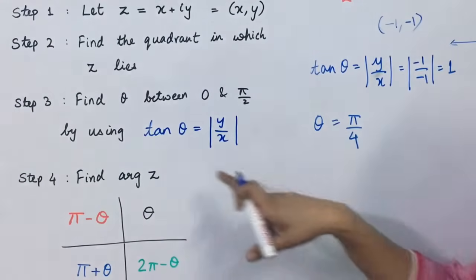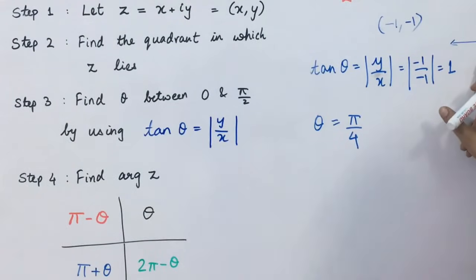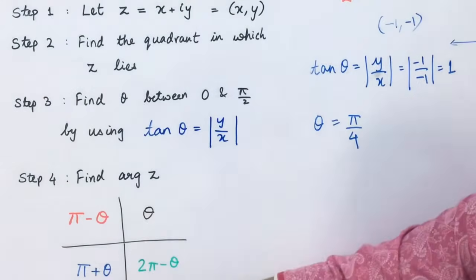Now, we will find the value for argument of z. This is not the value for argument. We are going to find it now. Now, what do we do? Because our z is in third quadrant.